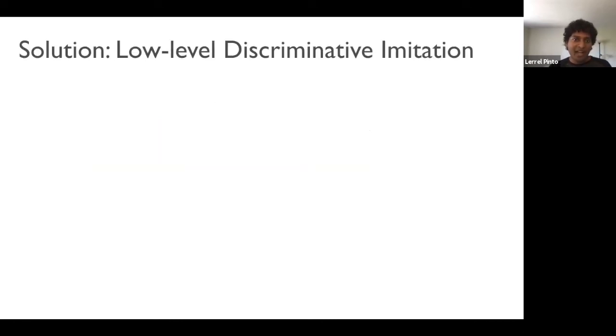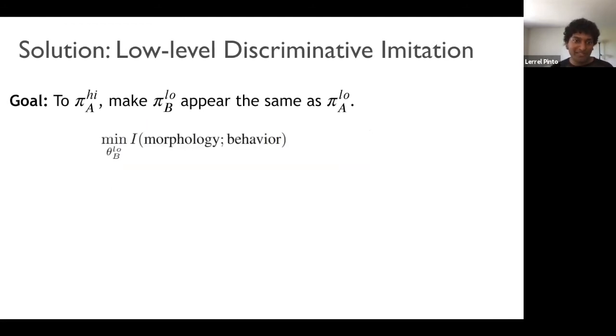So the key insight over here is to do discriminative imitation in the low-level space. So what this means is we want agent B's low-level to appear the same as agent A's low-level. So we formulate this as an information theoretic objective, where the goal is to minimize the mutual information between morphology, which is if it's agent A or agent B, and the behavior, which is the trajectory generated by the agent.